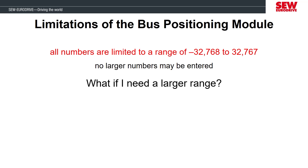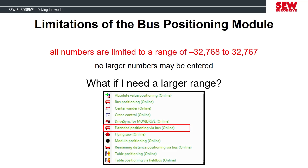If a 16-bit word is too small for the value range you need to send over the fieldbus, there is another application module called extended positioning via bus. This application allows you to set a 32-bit position instead of a 16-bit position by combining two 16-bit process data words into one long process data word for the position. It also adds additional process data words for the acceleration and deceleration time, bringing the total to six process data words in and out of the Movi Drive. We won't be demonstrating this module, but it's available if you need a larger position value or the ability to change acceleration or deceleration via process data.